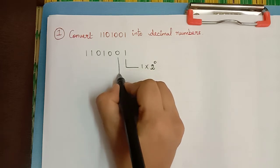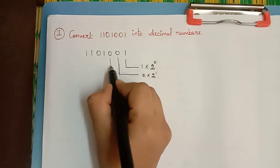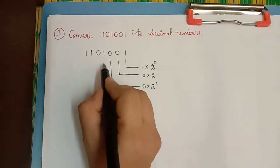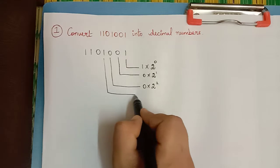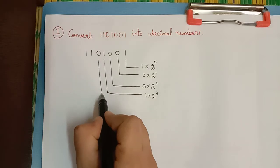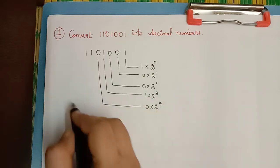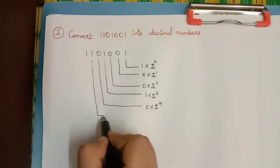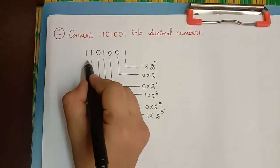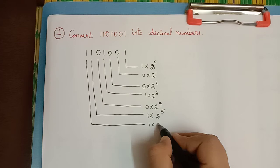Similarly, the next digit has to be multiplied with 2 to the power 1. The next number has to be multiplied with 2 to the power 2. Then 2 to the power 3, followed by 2 to the power 4, 2 to the power 5, and the last number has to be multiplied with 2 to the power 6.